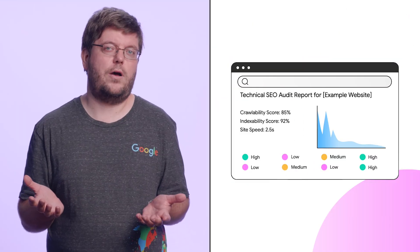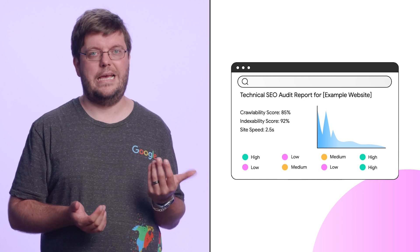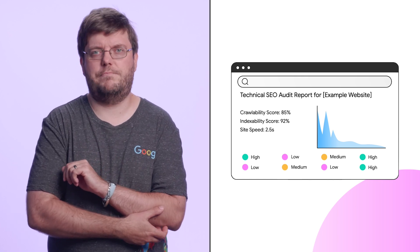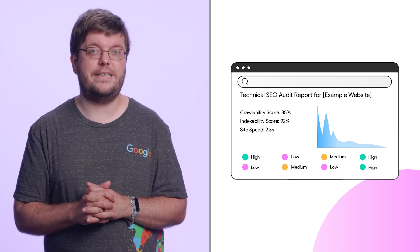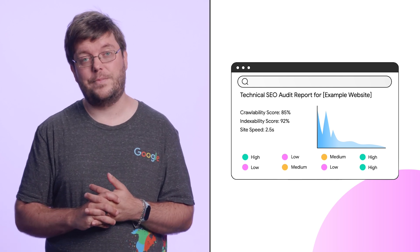Technical SEO audits often look like this: a nice graphic overview with some scores, sometimes with priority ratings. Unfortunately, sometimes they look like this. Reports with arbitrary scores or limits on numbers are quite hard to interpret. And do they even make sense?